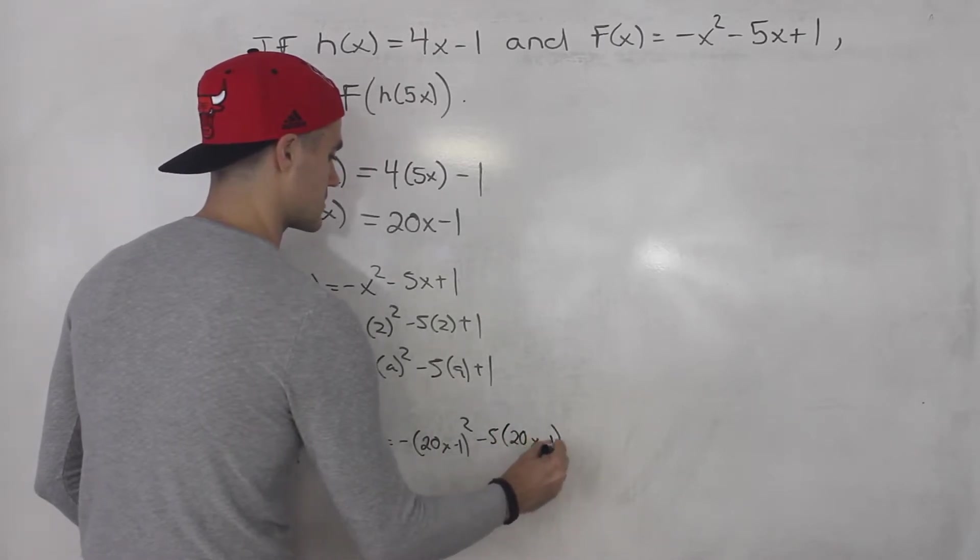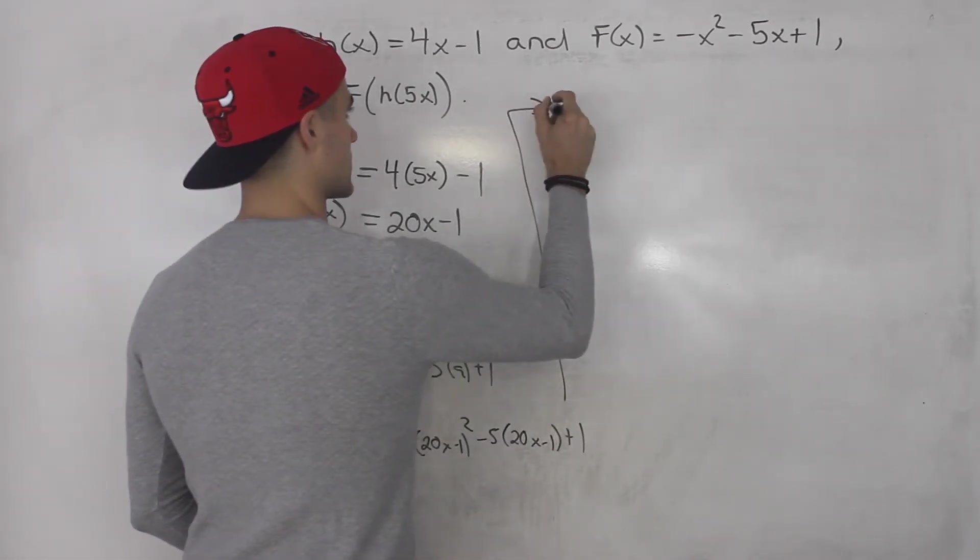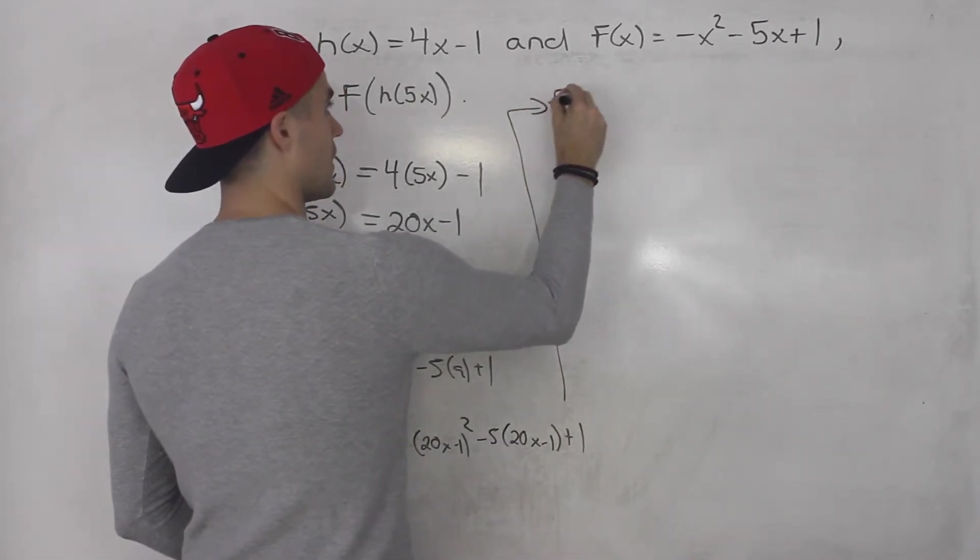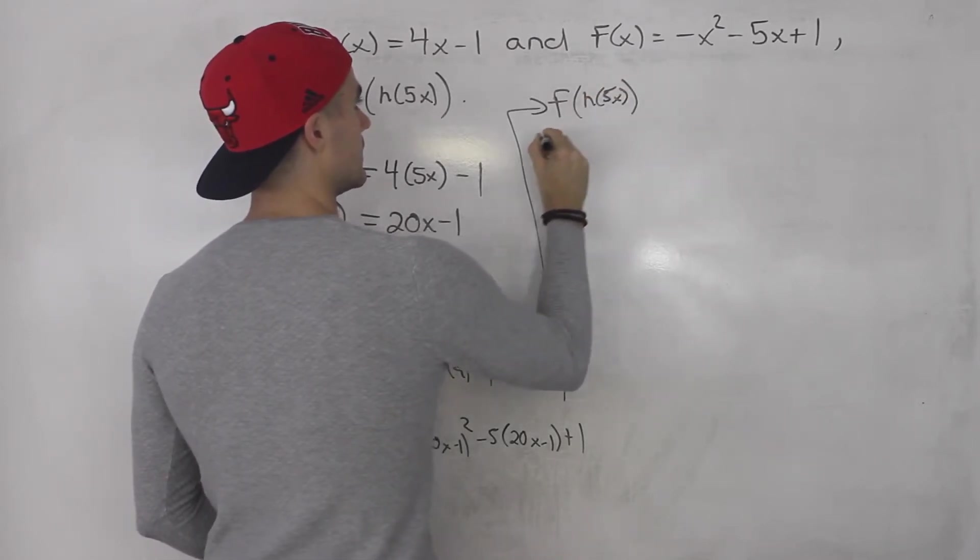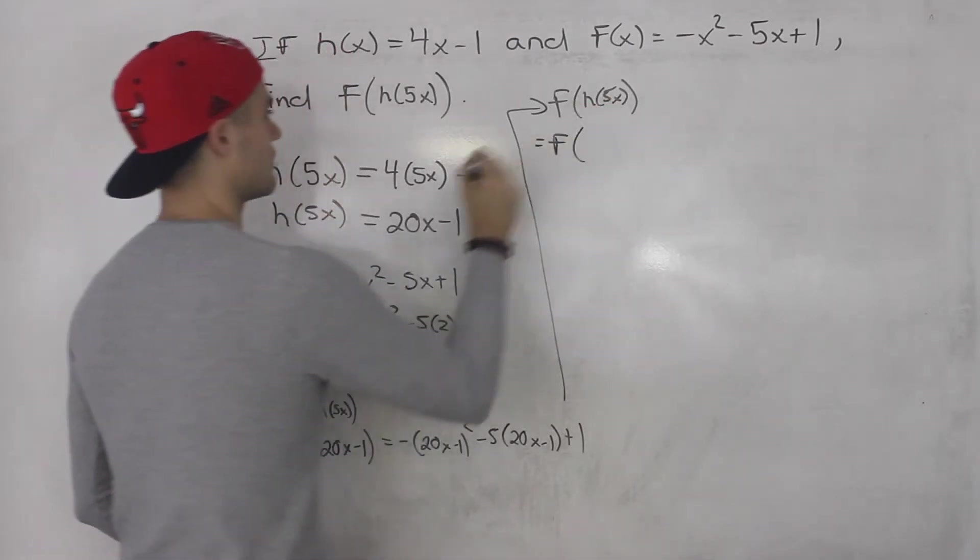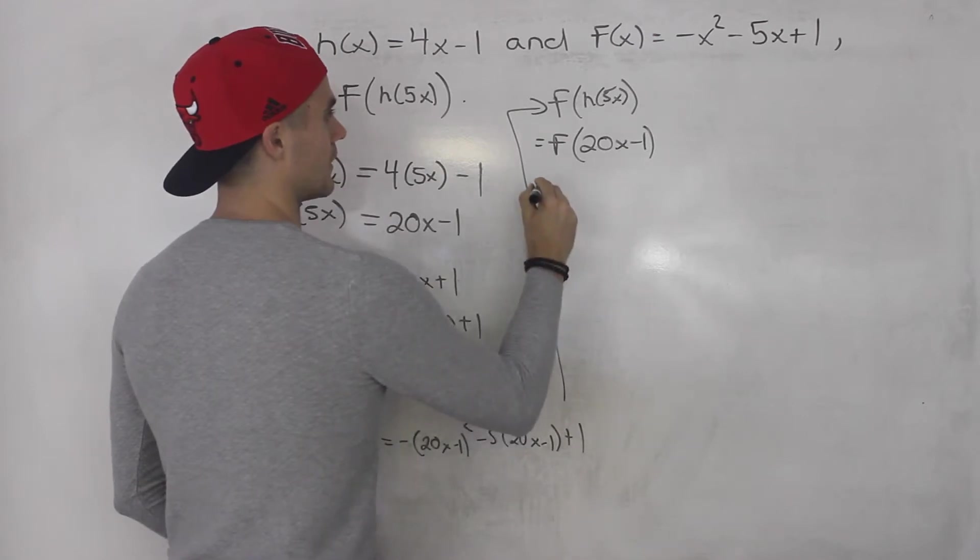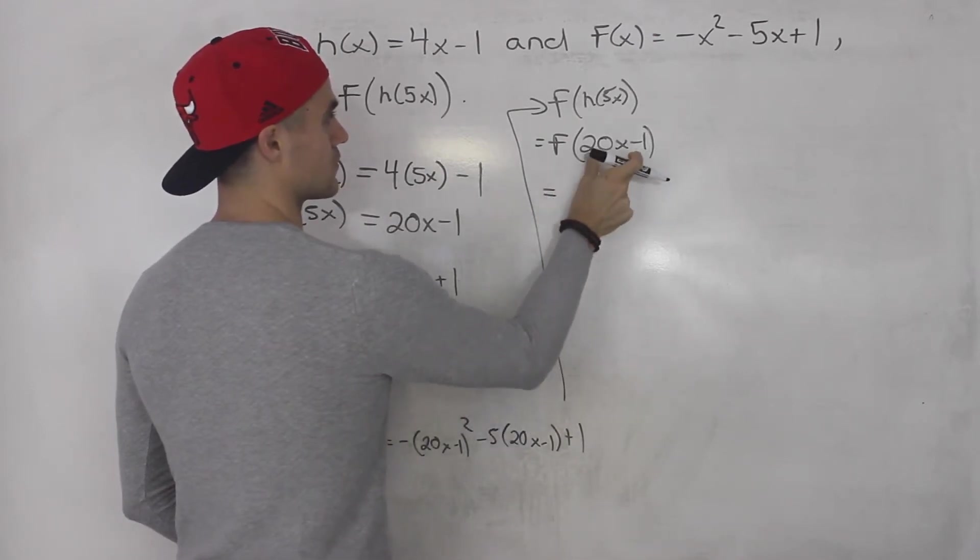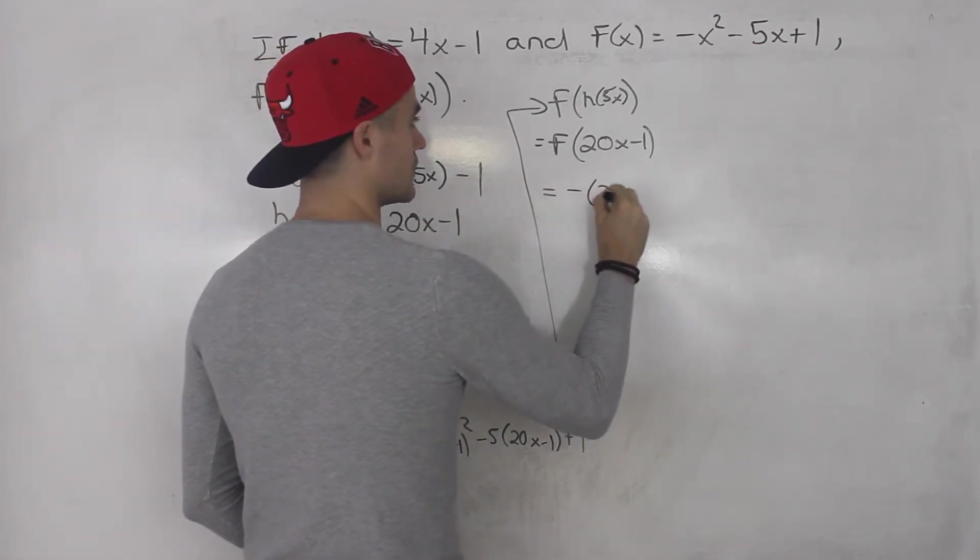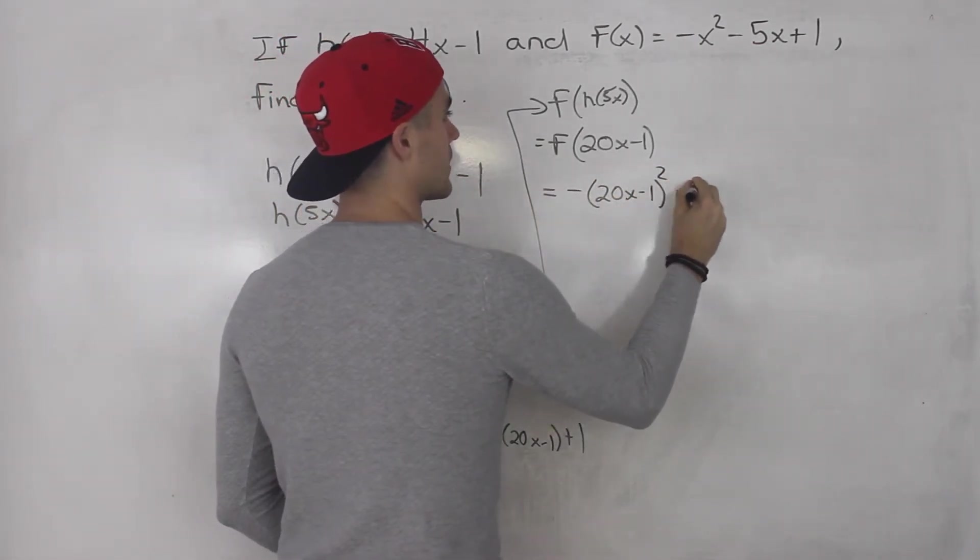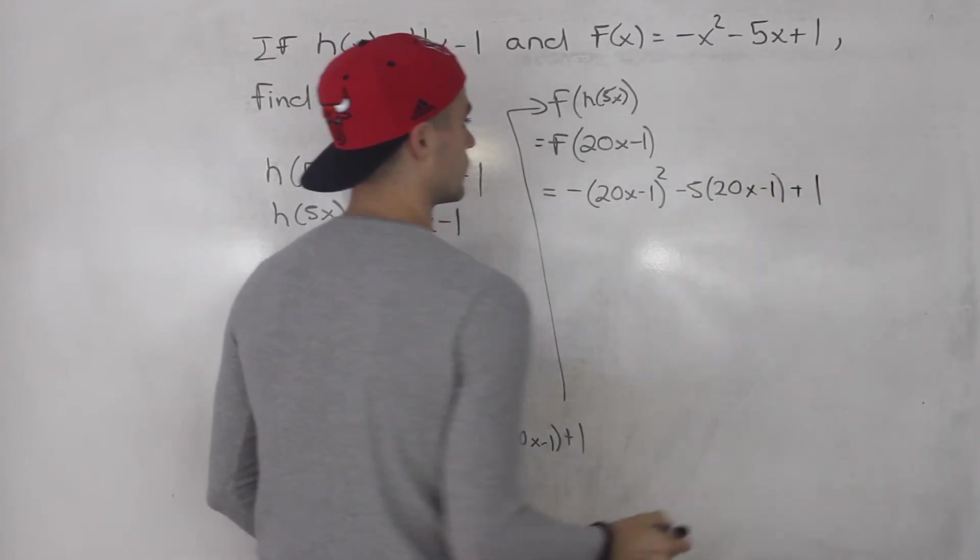All right, hopefully that makes sense. So basically, continuing this up here, let's actually rewrite it. So f(h(5x)) is the same as f(20x - 1). And that's basically equal to, we're plugging in 20x - 1 for all the x values in f(x). So -(20x - 1)² - 5 bracket (20x - 1) + 1.